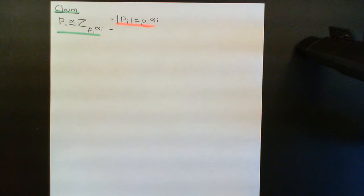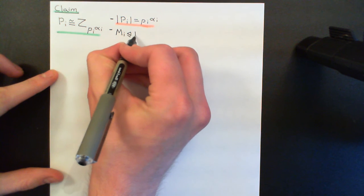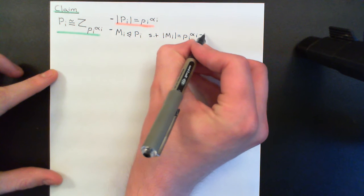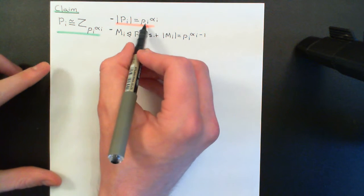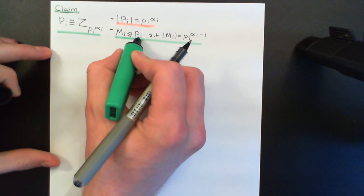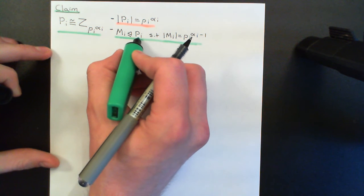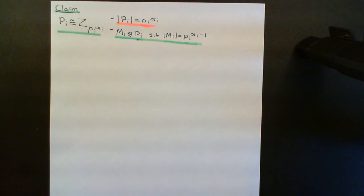There is a theorem in the video on P-groups which says there will always exist a normal subgroup of each of those possible sizes. In particular, I can find some capital M_i which is a normal subgroup inside Pi such that the order of M_i is equal to p_i to the power of α_i minus 1 — one lower power of p_i. I can always find a normal subgroup inside each Sylow subgroup which has order equal to the prime to a power one less than it appears in the order of the Sylow subgroup.